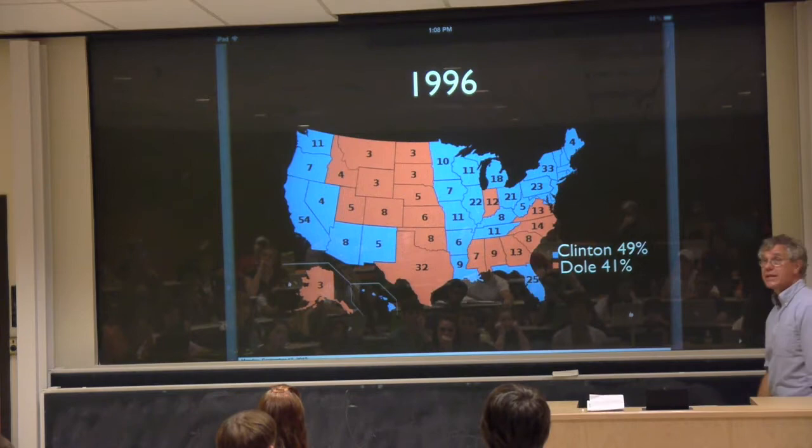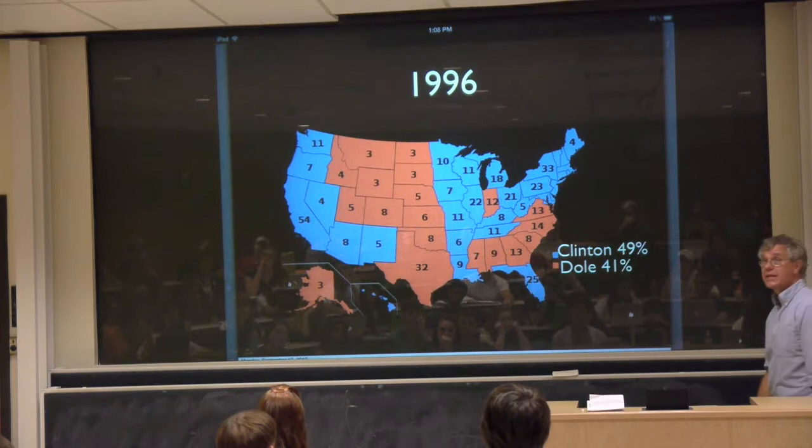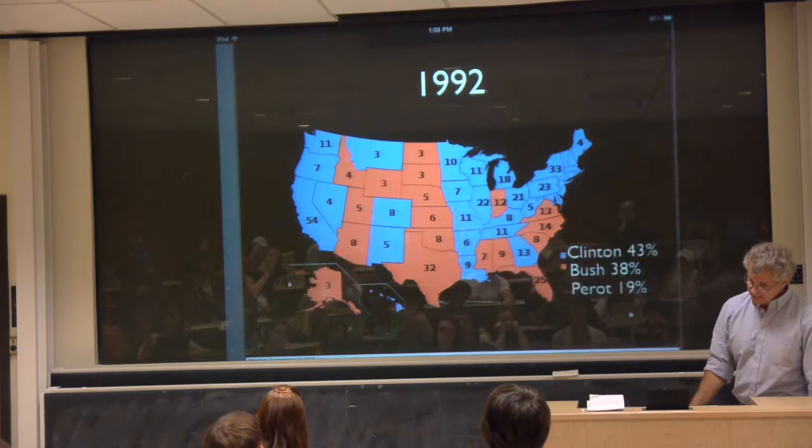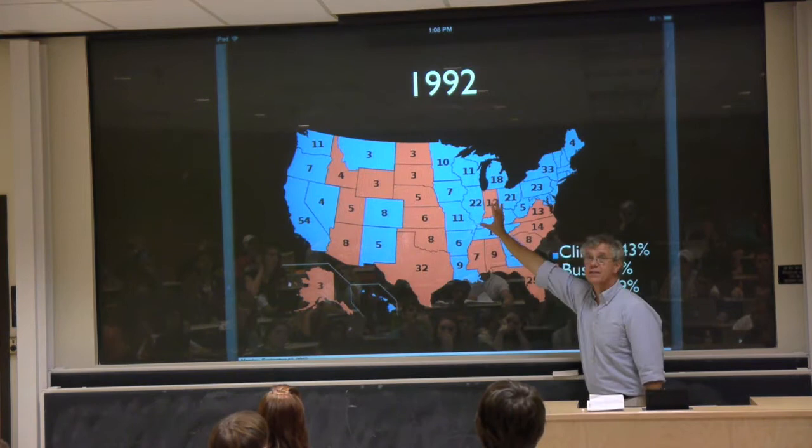In 1996, when Clinton was re-elected, you see a similar kind of pattern. In 1992, it's a little more confused, but you can still see the message of the L — though Ross Perot got 19% of the vote, and there are occasions where a third-party candidate really does confuse this pattern.